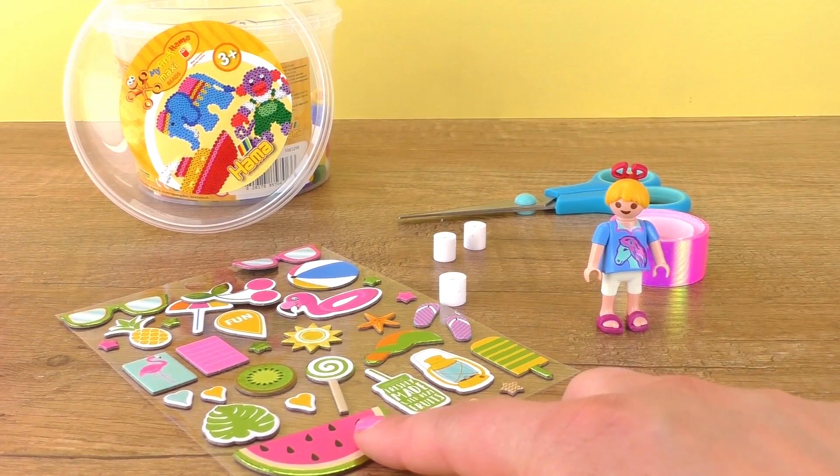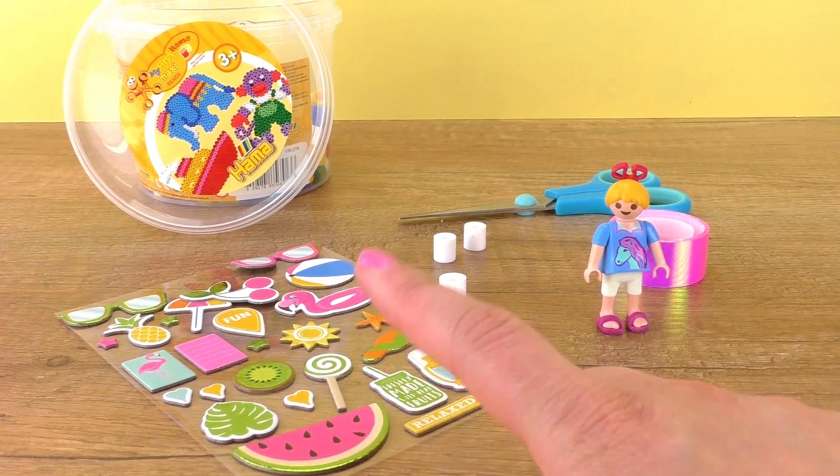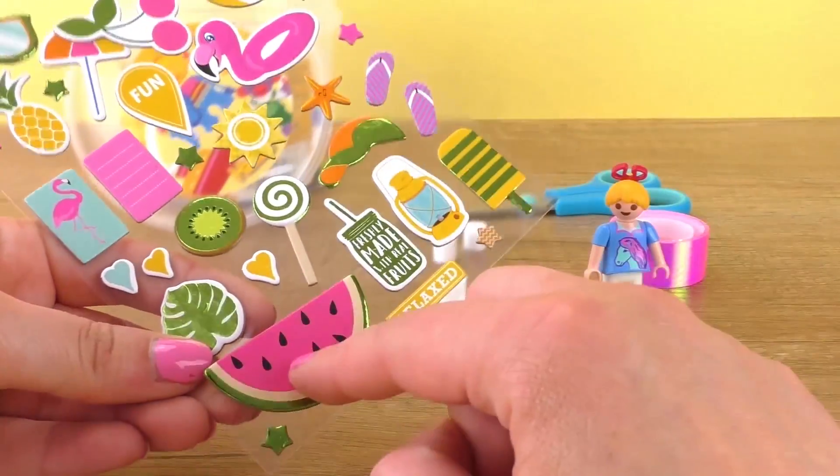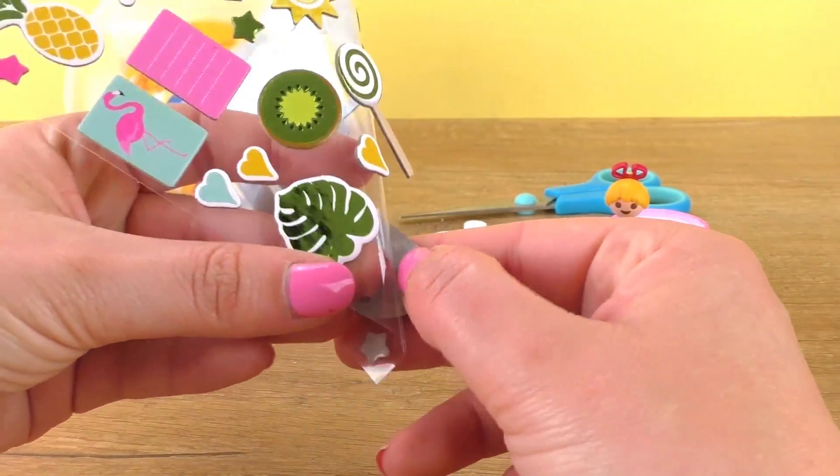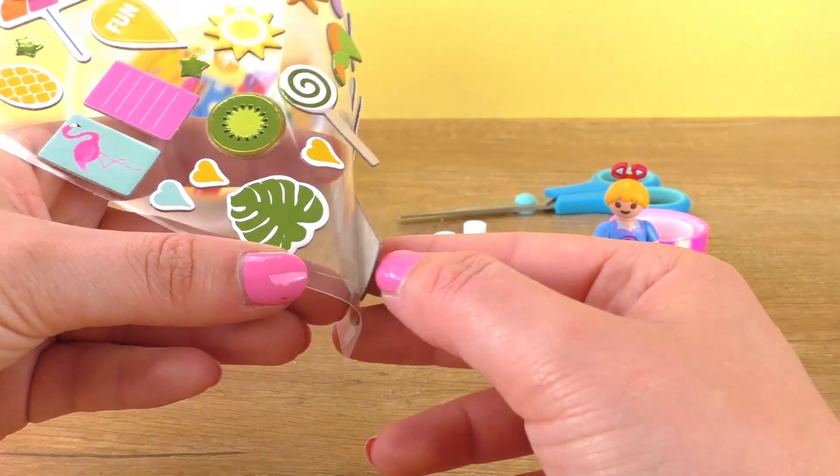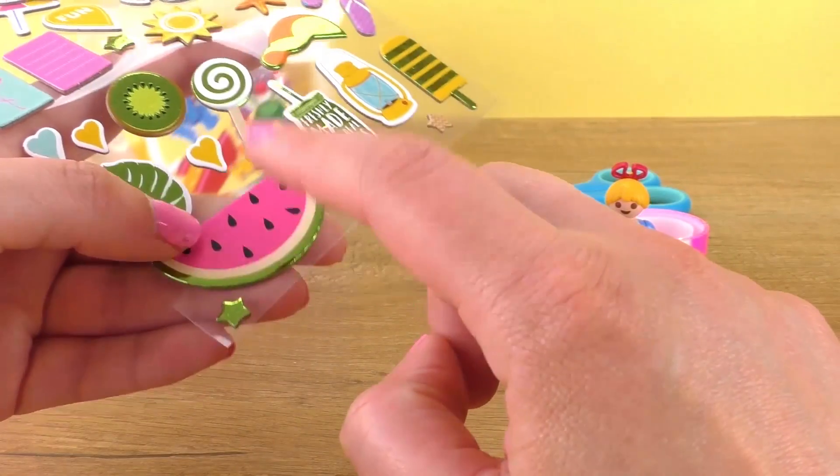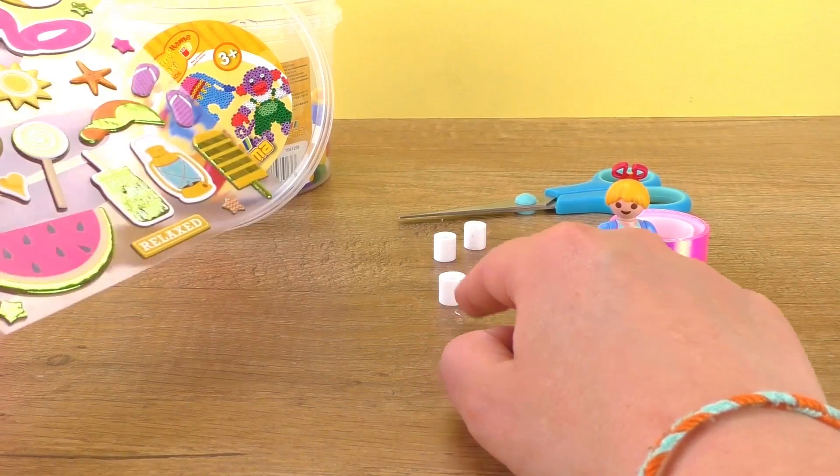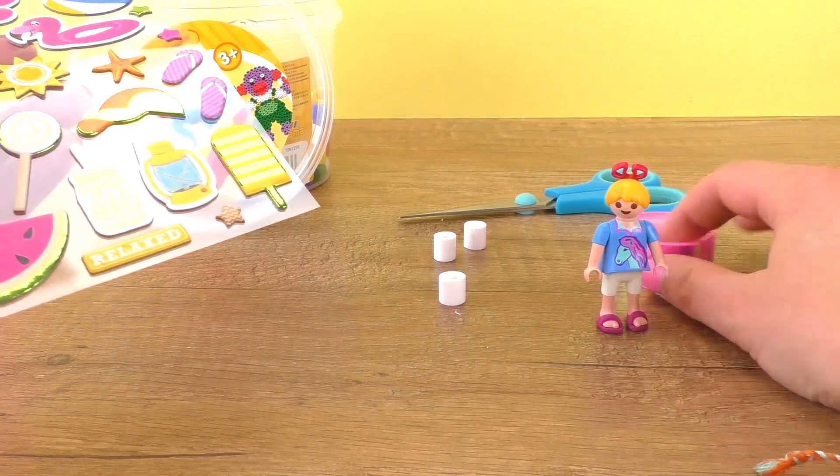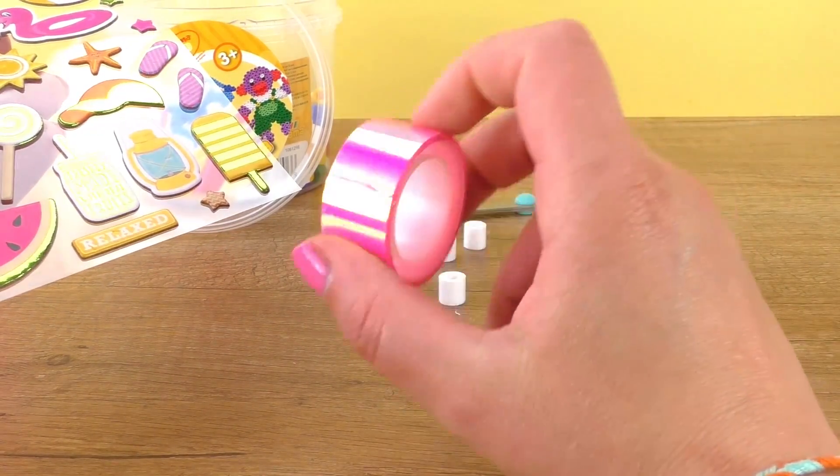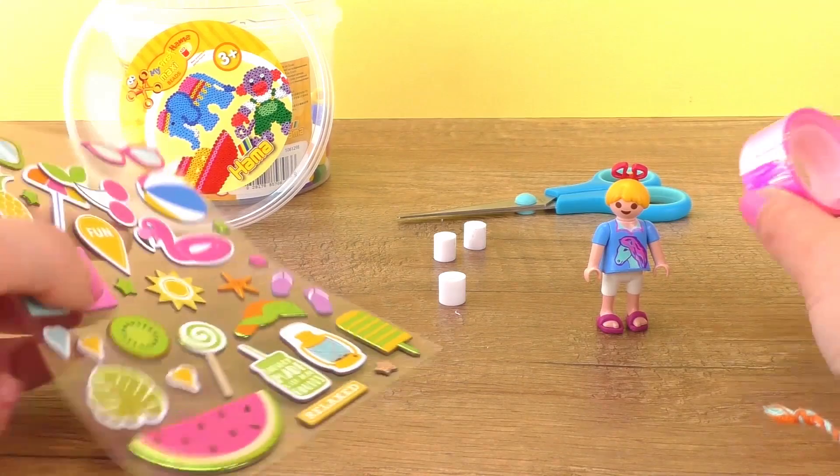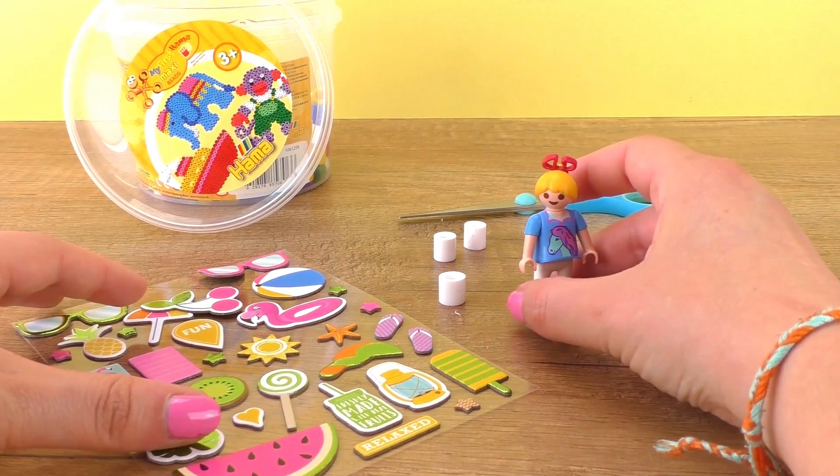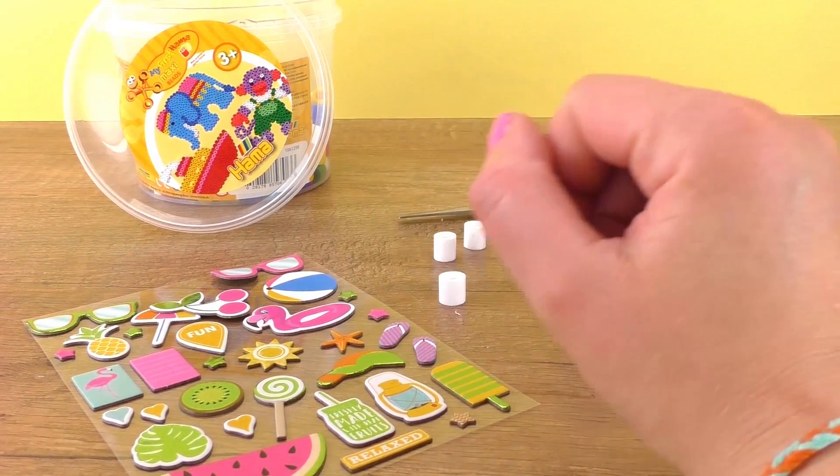For this cute furniture, you need these stickers or some paper that you decorated yourself. I'm going to use this watermelon - it's a sticker as you can see, so it's really convenient. Otherwise you'll need some glue. I have some really large iron-on beads, decorative tape, scissors of course, and Hannah, my Playmobil character.